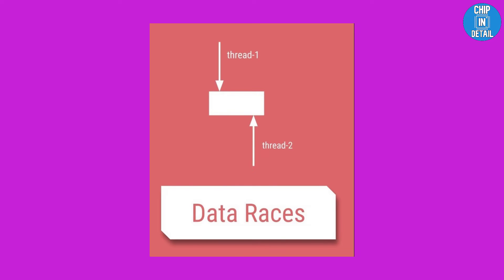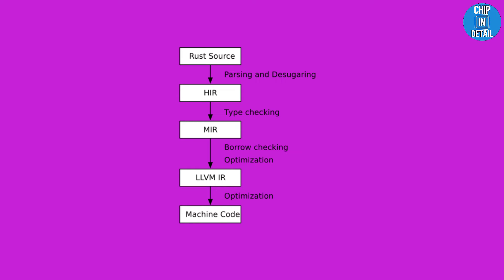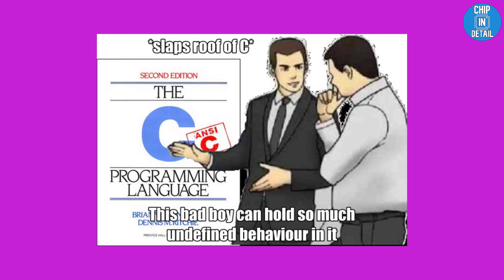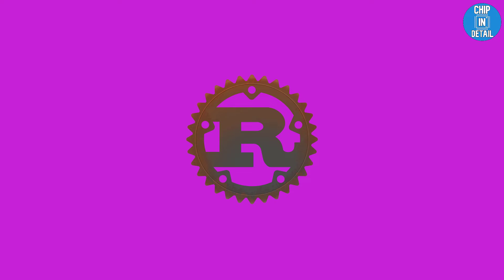Second, Concurrency Bugs: a data race occurs when multiple threads attempt to access a shared resource and at least one of them is attempting to modify it. Rust programming uses the same enforced mechanisms that prevent memory corruption to prevent unsynchronized access to a shared resource. Third, Undefined Behavior Bugs: undefined behavior is impossible in safe Rust. Any operation that compiles has a well-defined set of outputs and side effects.